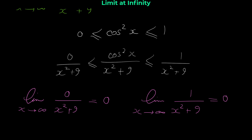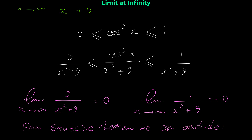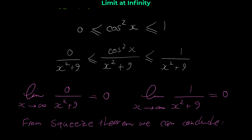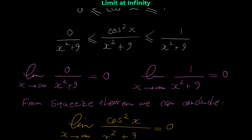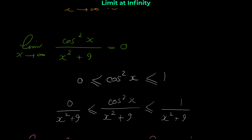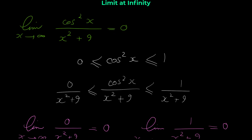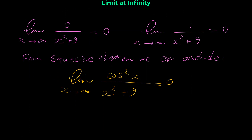Based on the squeeze or sandwich theorem, we can conclude that the limit of the middle function — limit of cosine squared 2x over x squared plus 9 — is also zero. The question asked us to prove that this limit equals zero as x approaches infinity, and we have proved that it is true.